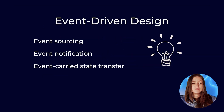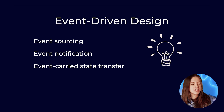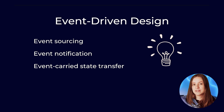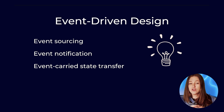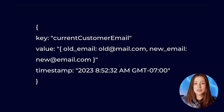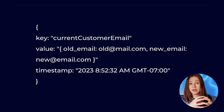Next up, we have event-carried state transfer. Event-carried state transfer refers to a situation in which the state of the downstream systems is updated by incoming events. This is different from an event which carries a notification because it affects the state directly. For example, you might have a 'current customer email' event which holds the current state of the customer email within the event and transfers the state that way.